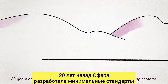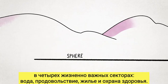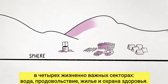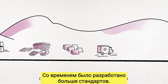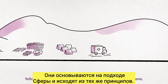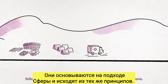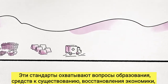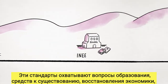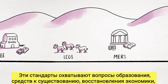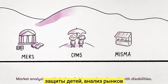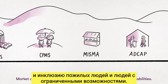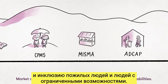Twenty years ago, Sphere developed minimum standards in four life-saving sectors: water, food, shelter, and health. Over time, more standards have been developed following Sphere's approach and built on the same foundations. These standards cover education, livestock, economic recovery, child protection, market analysis, and inclusion of older people and people with disabilities.